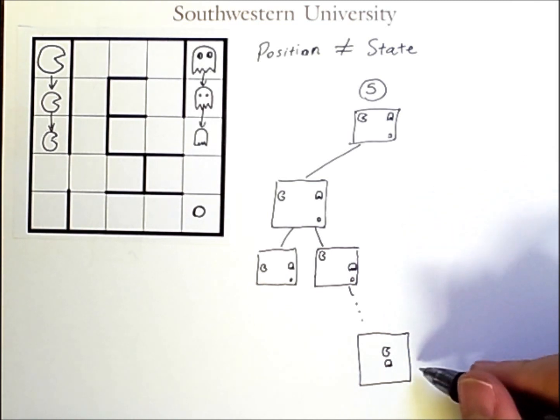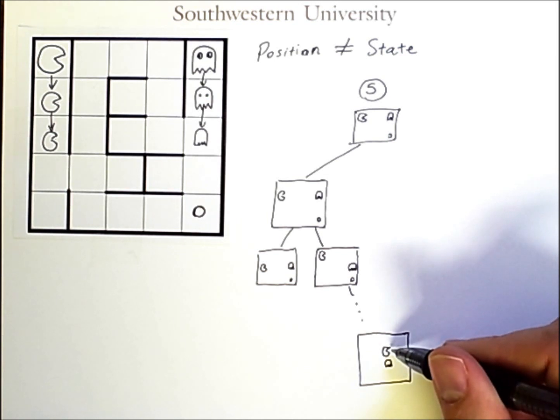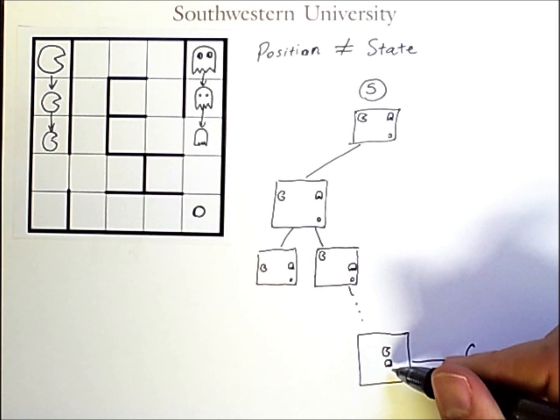And, of course, a goal state, the state where we would stop, would be one in which the positions of Pac-Man and the ghost are the same and in which there is no more power pill.